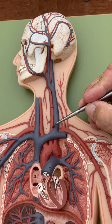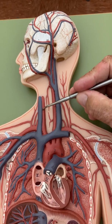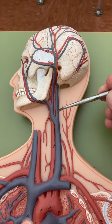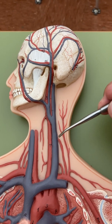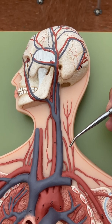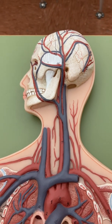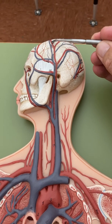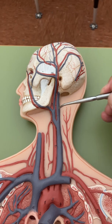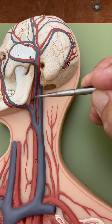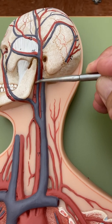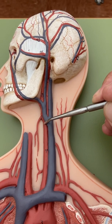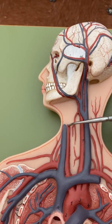Now let's follow the common carotid up — we have one on each side. Up here the common carotid is going to split into an external and internal branch. Any time you have a vessel that has 'common' to begin with, it means it's going to split into internal and external. The external carotid supplies blood to the external part of the skull and head, while the internal carotid goes deep into the brain.